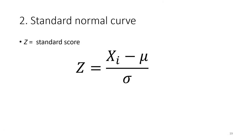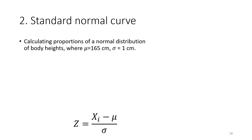What we have been calculating is called the standard score, or z-score. We use this score to refer to the standard normal table to obtain the probability.